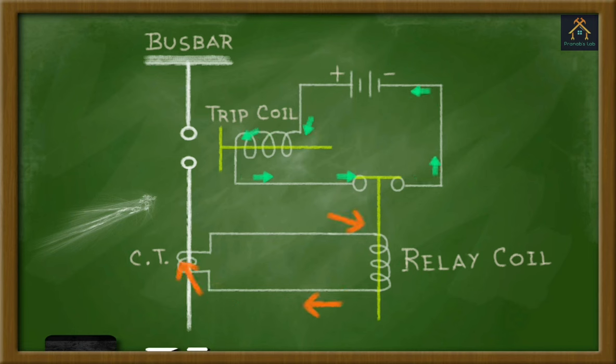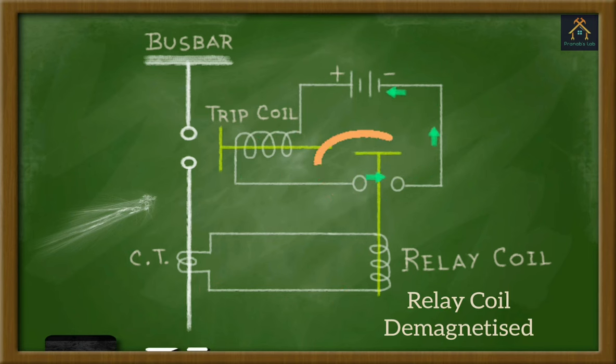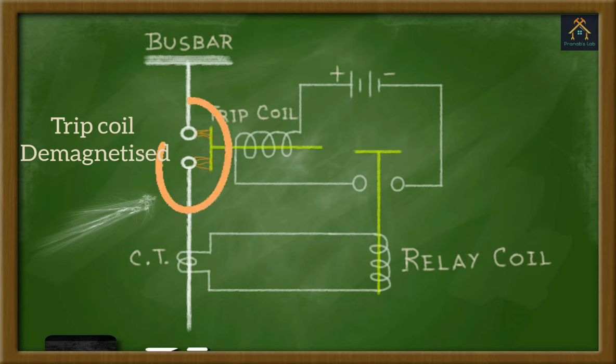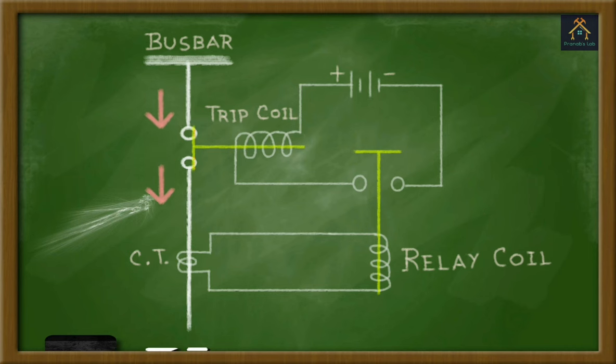As a result, the CT and relay coil will sense no current. Then, the relay coil is de-energized and it releases the plunger. Then, no current flows through the trip circuit and the trip coil is de-energized and the trip coil plunger is released. And the circuit breaker is in closed condition.